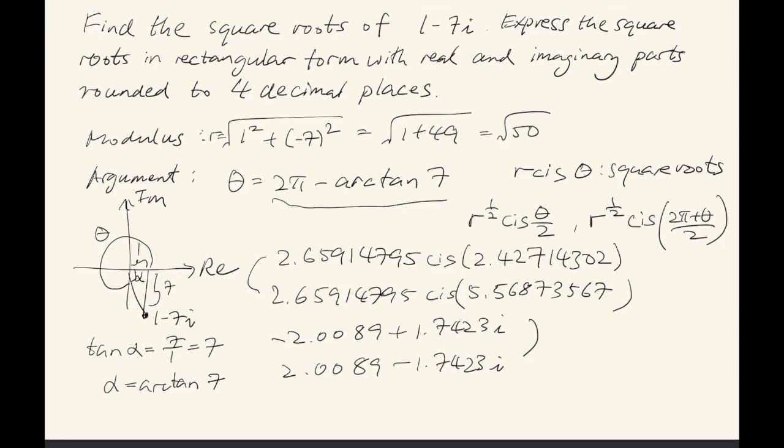Notice that these are negatives of each other. That's not surprising because they are square roots. When you calculate the square root of a number, the negative of any square root is also a square root.